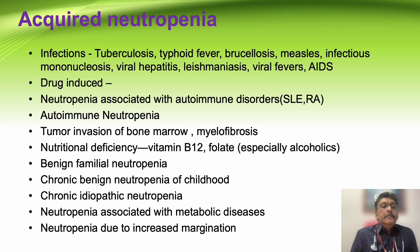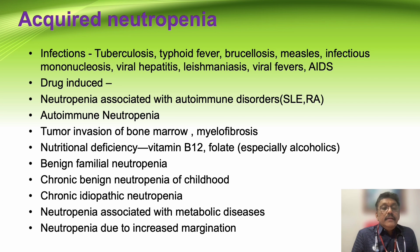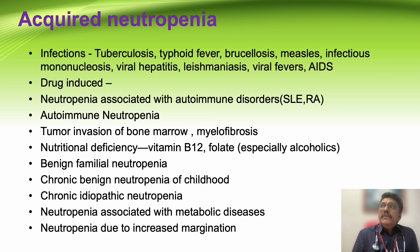Various causes of neutropenia include infections such as TB, typhoid, brucellosis, measles, infectious mononucleosis, viral hepatitis, leishmaniasis, many viral fevers, HIV, and immune disorders like SLE and rheumatoid arthritis. Autoimmune neutropenia itself can present without secondary diseases. Other causes include bone marrow invasion, myelofibrosis, nutritional deficiency (B12, folic acid), benign familial neutropenia, chronic benign neutropenia of childhood, chronic idiopathic neutropenia, neutropenia associated with metabolic disorders, and neutropenia due to increased marginalization.